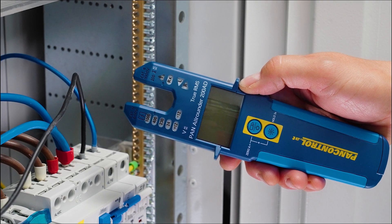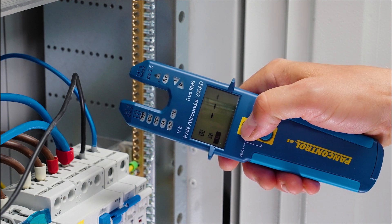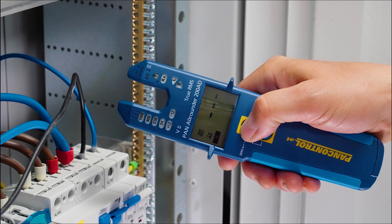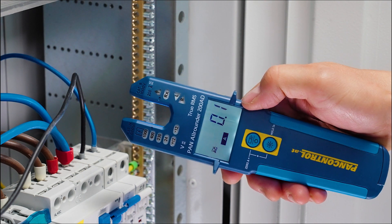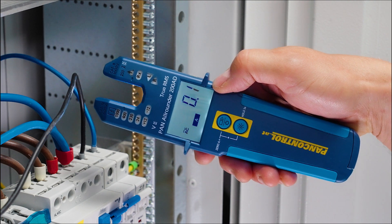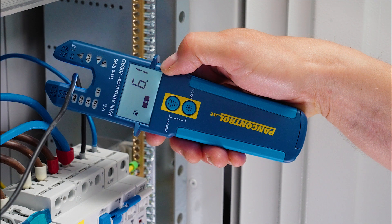Now we want to measure the current in the black cable. Pressing the operating button once switches the tester on, a second time activates the current measurement. As soon as the cable is placed in the middle of the fork, the current value can be read in the display.